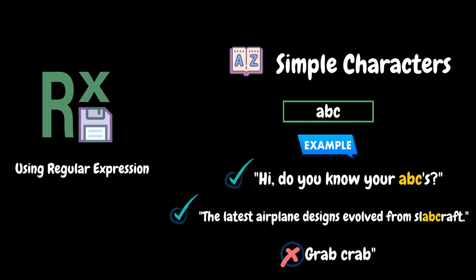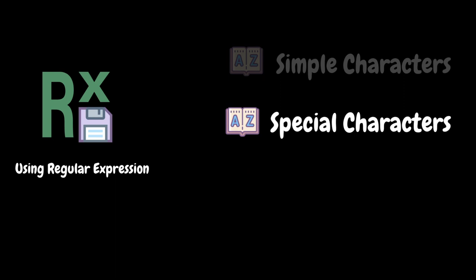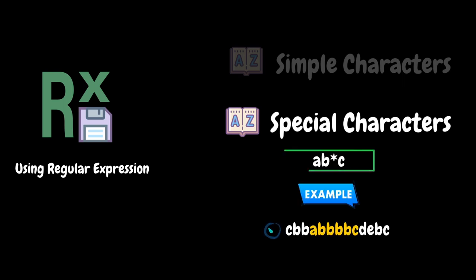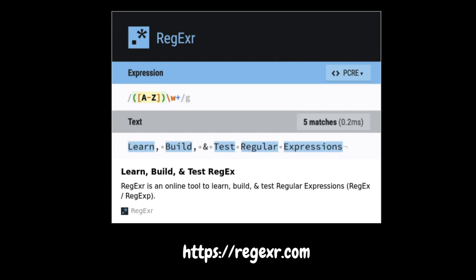We can also define regular expression patterns using special characters when the search requires something more than a direct match — like finding one or more characters or finding whitespace. For example, to match a single A followed by zero or more Bs followed by C, we specify the pattern as AB*C. Here the asterisk after B means zero or more occurrences of the preceding item. So in the given example it will match ABBBBC. If you want to master regular expressions, you should refer to the regxr.com website. Other performance testing tools like LoadRunner also capture dynamic values using boundary-based search — we define the left boundary and right boundary of the dynamic value, and the tool captures the string within those boundaries.